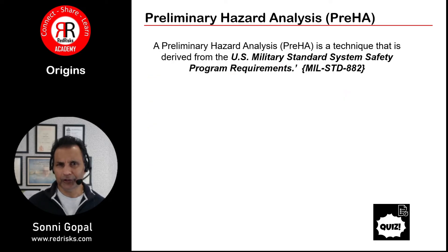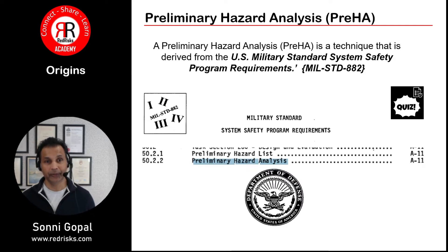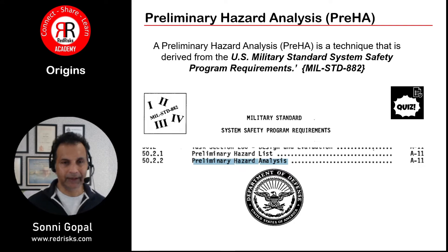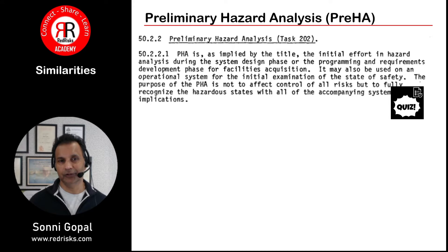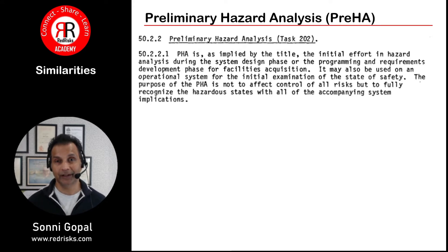Where did it all start from? The Preliminary Hazard Analysis is a technique that came originally from the U.S. Military Standard Safety Programme requirements, the MIL-STD-882. I've managed to get a copy of that document and in there, if you look at section 52.2, it actually gives you a definition which is very similar to the CCPS guidelines.